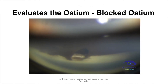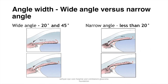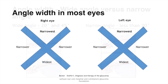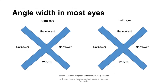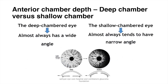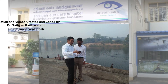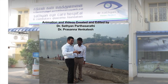Focal points: always correlate anterior chamber angle width with anterior chamber depth. Width less than 20 degrees is considered narrow; width greater than 20 degrees is considered wide. The superiormost angle is the narrowest. A deep-chambered eye almost always has a wide angle compared to a shallow-chambered eye, making the iris have minimal contact with the lens and making it less prone to pupillary block.